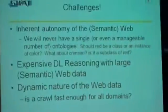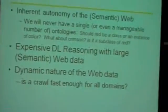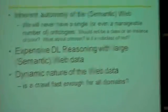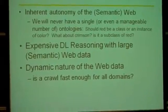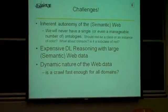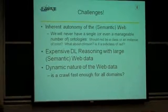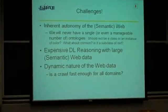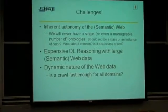Semantic Web is not something we go to when we need to search or look for information. So there are obviously challenges. Some of the challenges are just with the web itself. You have inherent autonomy of the web — it's very hard to agree on things. Human-processable web can deal with that, but machine-processable web may have trouble.